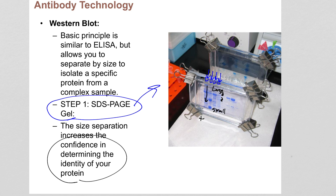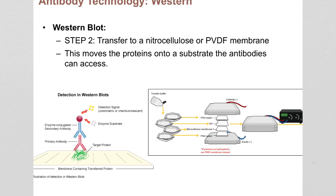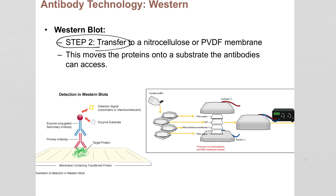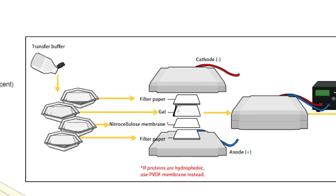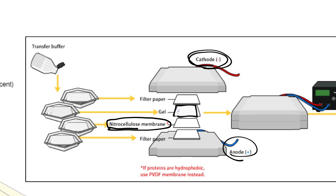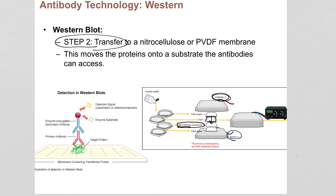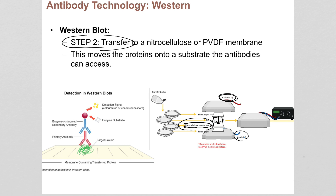Once you have the gel run, you do something called a transfer — that's step two. You take your gel and lay it on top of a transfer membrane, often made of nitrocellulose. You stack them flat and apply an electrode again — positive charge, negative charge — but this time the proteins move out of the gel horizontally, transferring directly onto the paper. That nitrocellulose membrane ends up being like a carbon copy of the gel, a mirror image of all the proteins transferred onto the membrane.